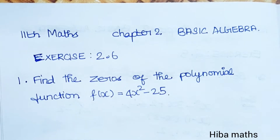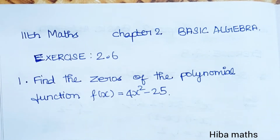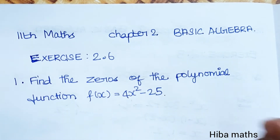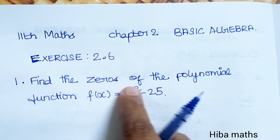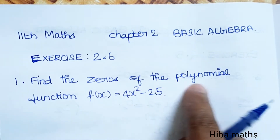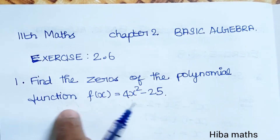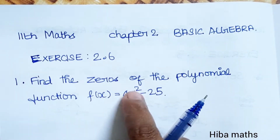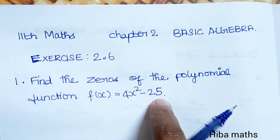Hello students, welcome to Hibamax, 11th Standard Max, Chapter 2, Basic Algebra, XS 2.6, first question: find the zeros of the polynomial function f of x equals 4x squared minus 25.